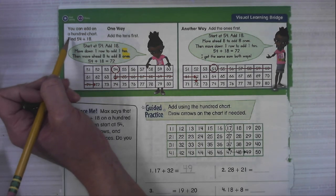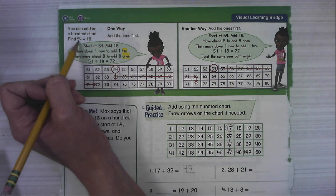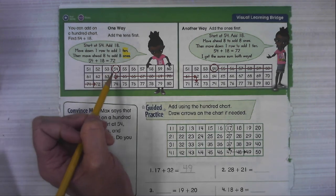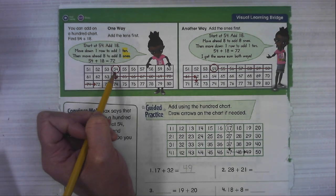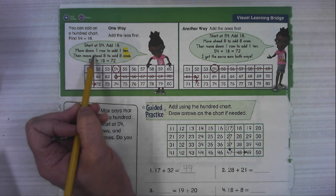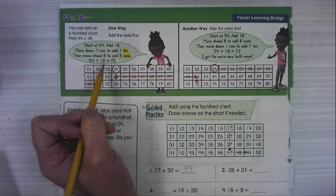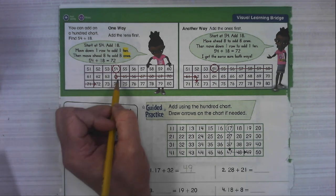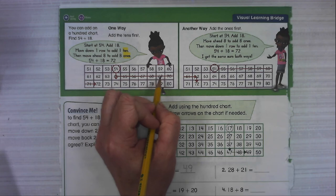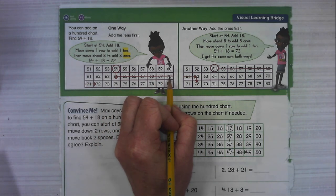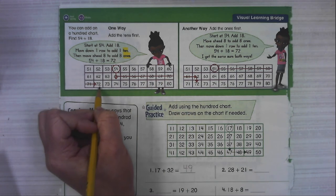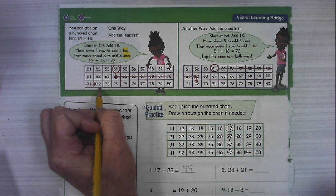So it says you can add on a hundreds chart to find 54 plus 18. So she says start with 54 and we're going to add 18. Move down one row to add 110 and then move ahead eight to add eight ones. One, two, three, four, five, six, we've got to go down to the next row, seven, eight.